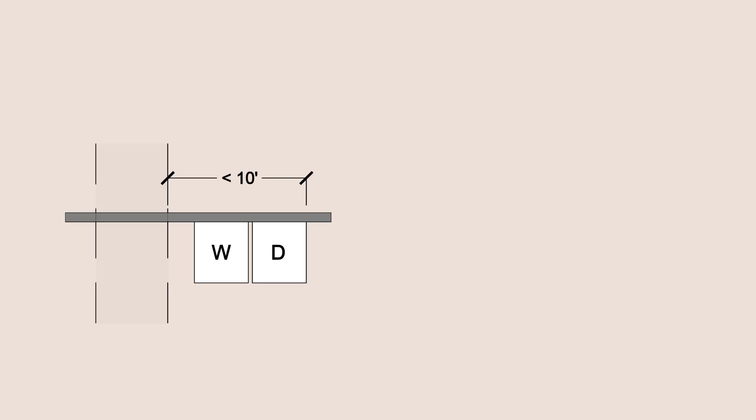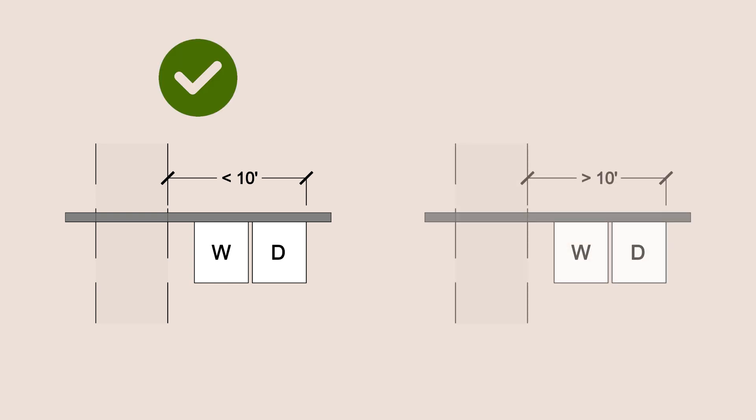For washers, dryers, and dishwashers, you can follow the same rule: they need to be on a wall connected to a trench and less than 10 feet away from the trench. If the fixtures are more than 10 feet from the trench, it would be too far for the water to travel.